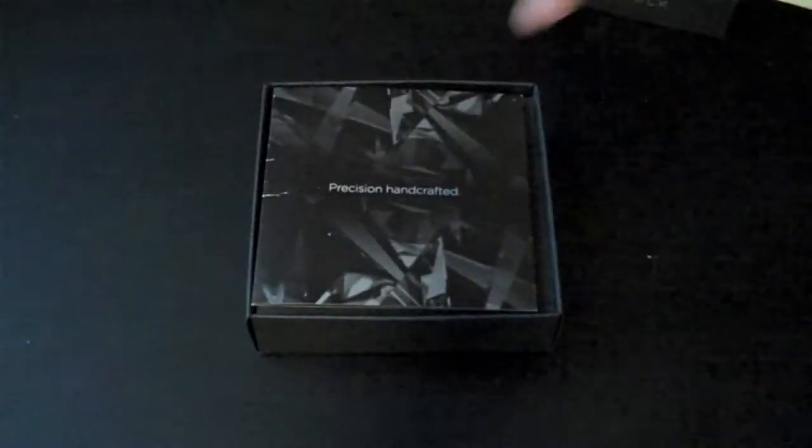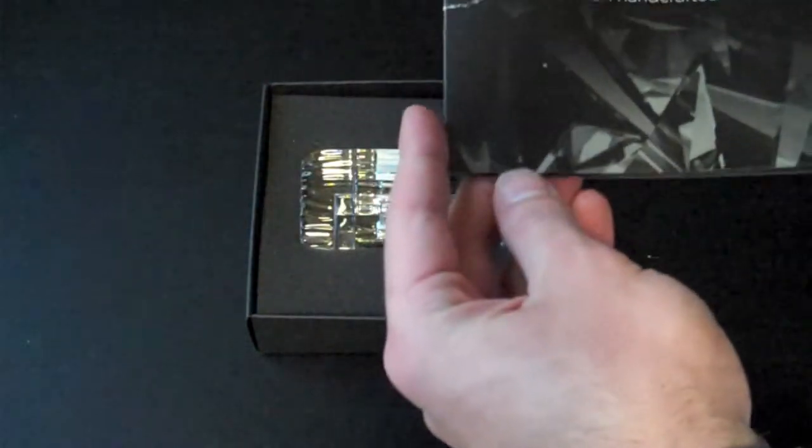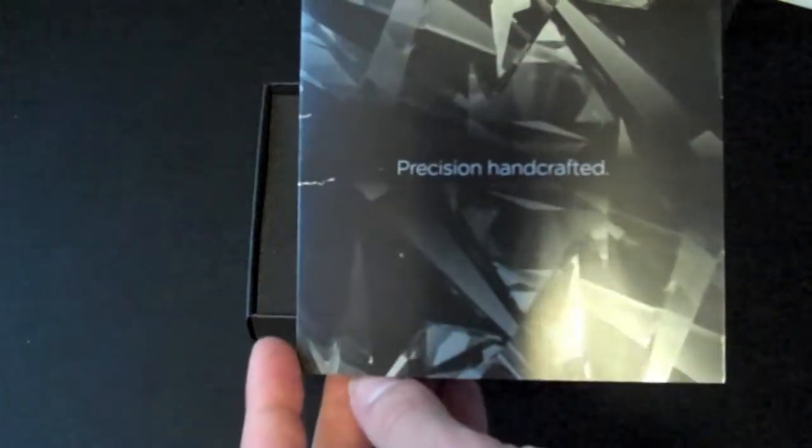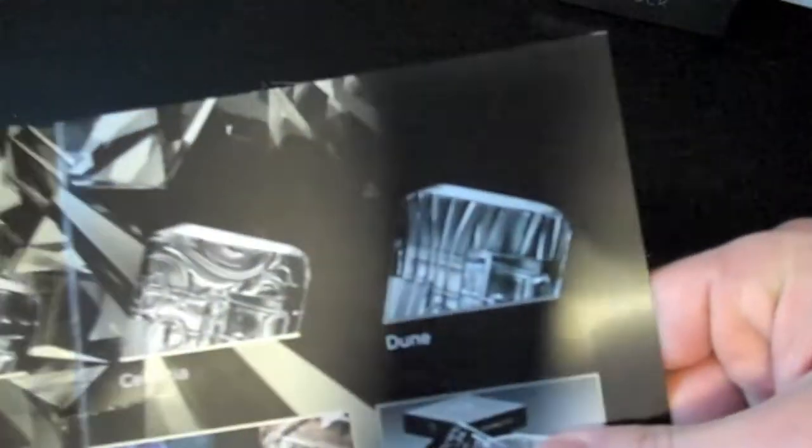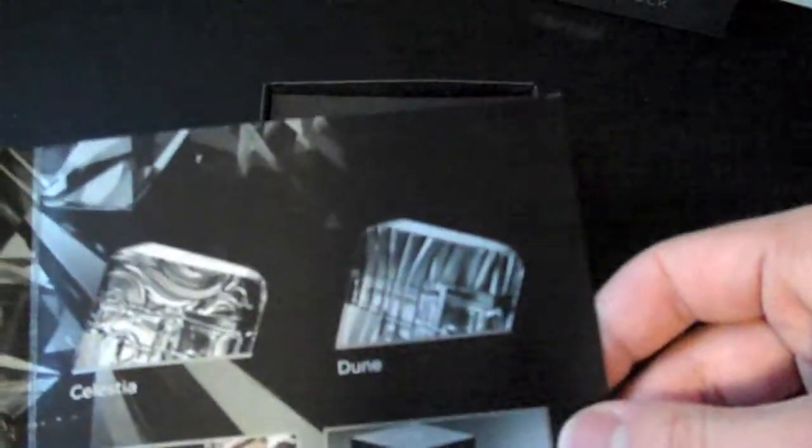In the box itself you have the manual, it is handcrafted precision you can see right there. You have three different kinds: the Boat, the Celestia, and the Dune. The one they sent me is the Dune right there.